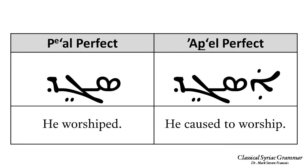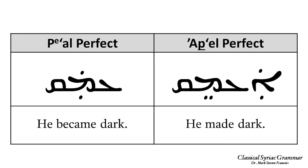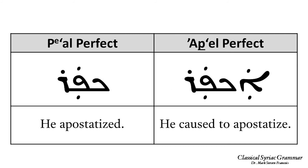For example, 'segev' means 'he worshiped' in the Pe'al perfect; in the Af'el perfect it is 'asgev,' meaning 'he caused to worship.' 'Evav' means 'he did' in the Pe'al; in the Af'el it is 'ah-bev,' meaning 'he caused to do.' 'Imak' means 'he became dark' in the Pe'al; in the Af'el it is 'ah-mek,' meaning 'he made dark.' And 'kefar' means 'he apostatized'; in the Af'el it becomes 'ah-par,' meaning 'he caused to apostatize.'